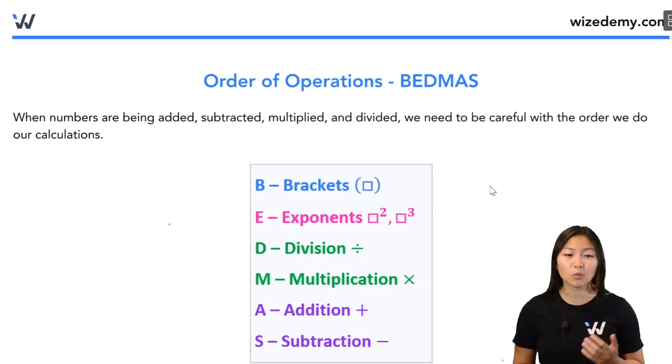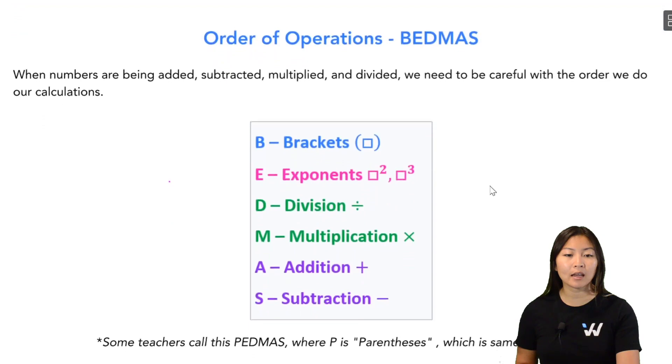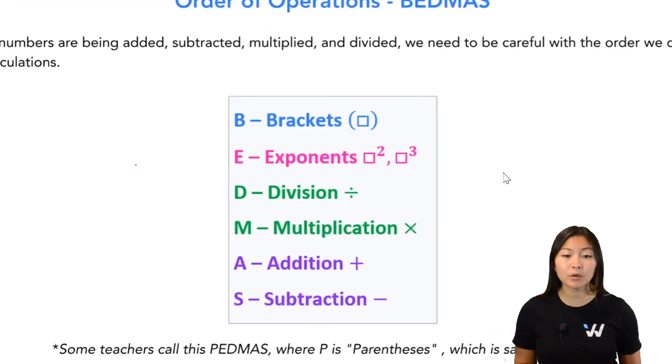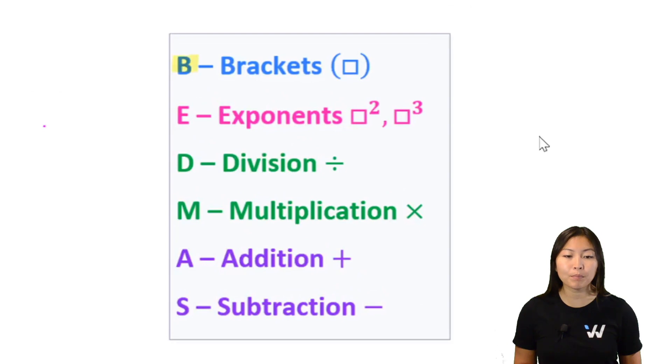Okay, so when we have a bunch of numbers that we need to calculate—adding, subtracting, multiplying, and so on—we follow this acronym called BEDMAS. Now B stands for brackets, meaning that the first thing we're going to do is look for brackets. If we see brackets, we are going to calculate or simplify whatever is inside the brackets first.